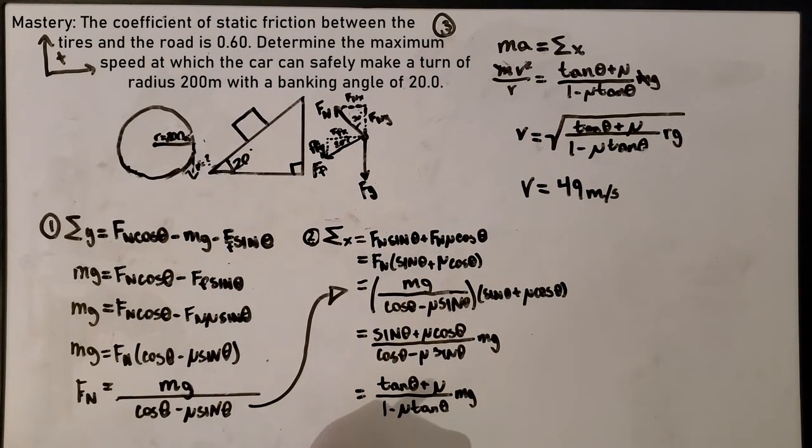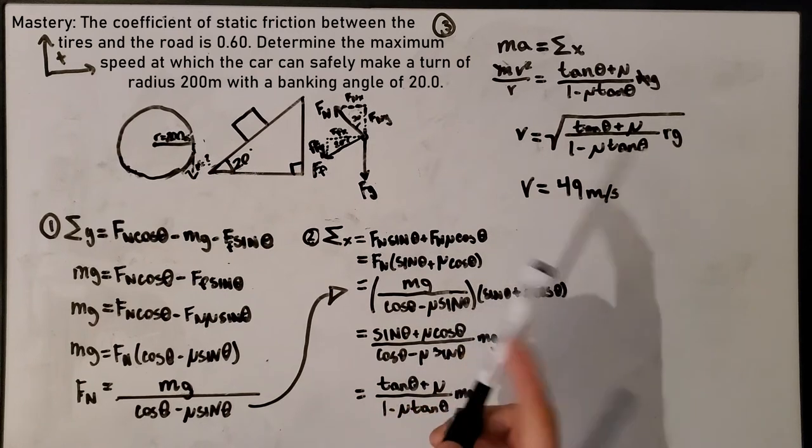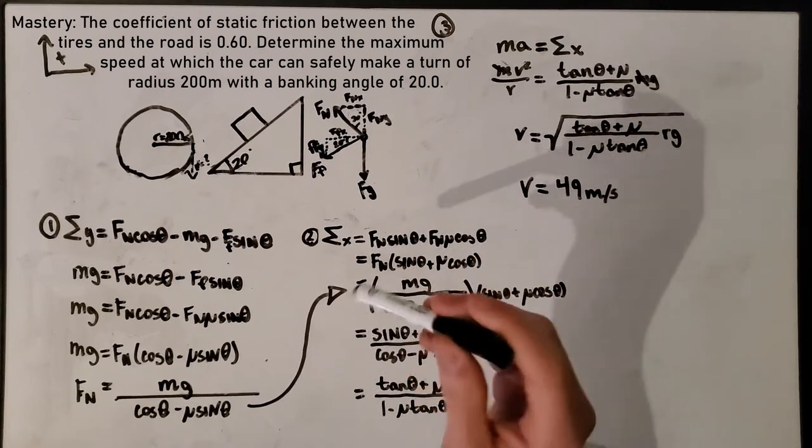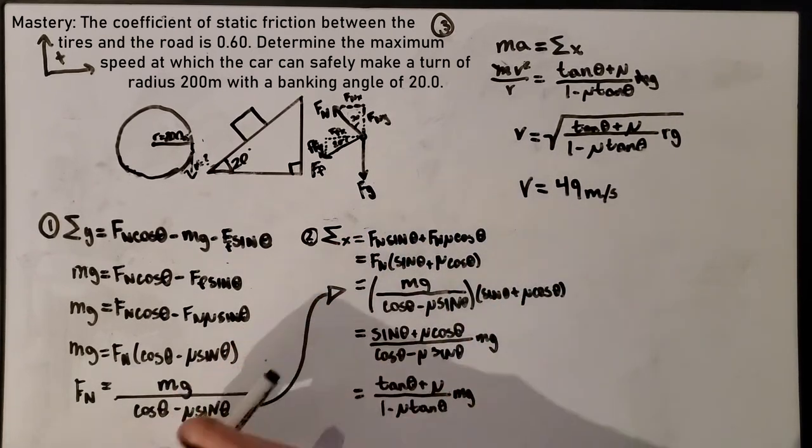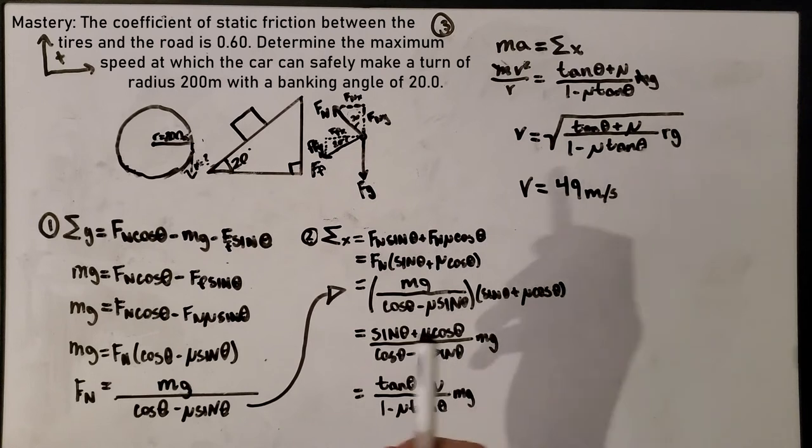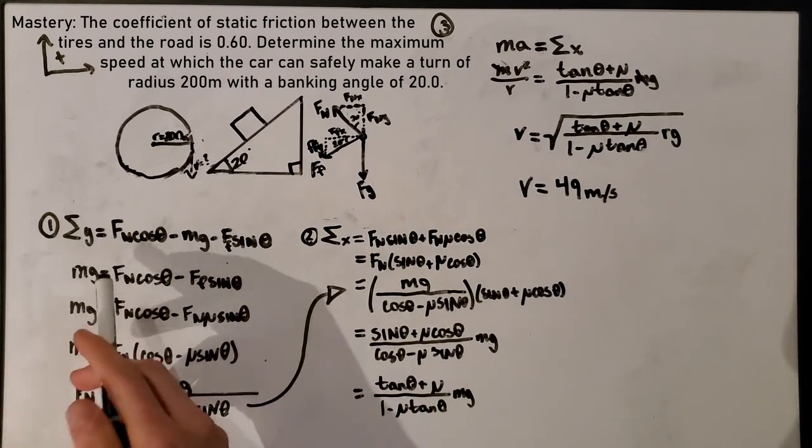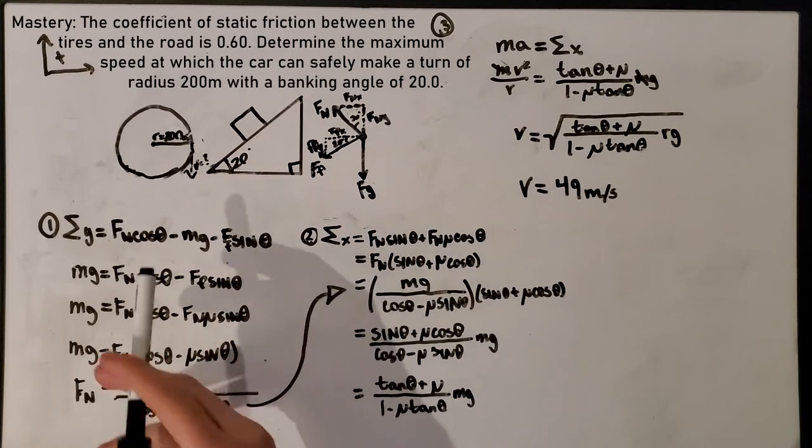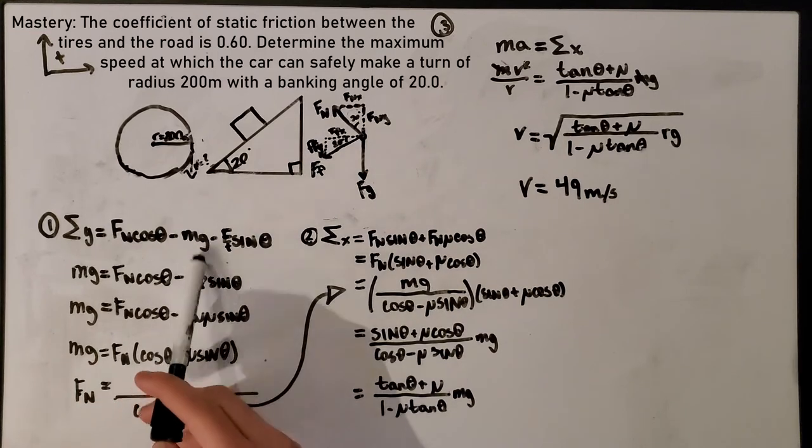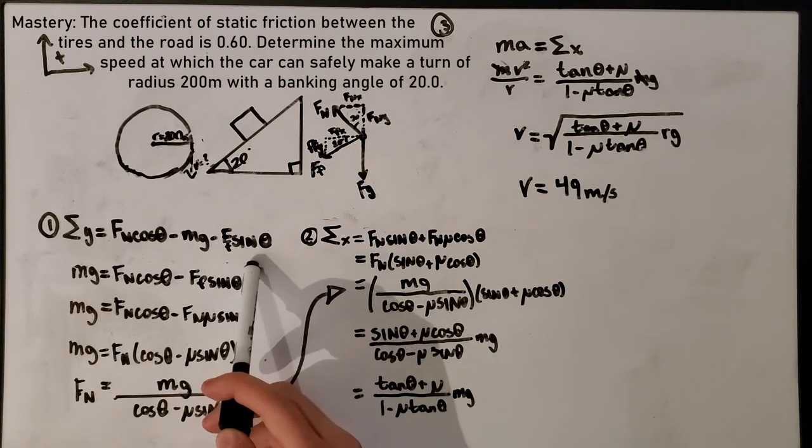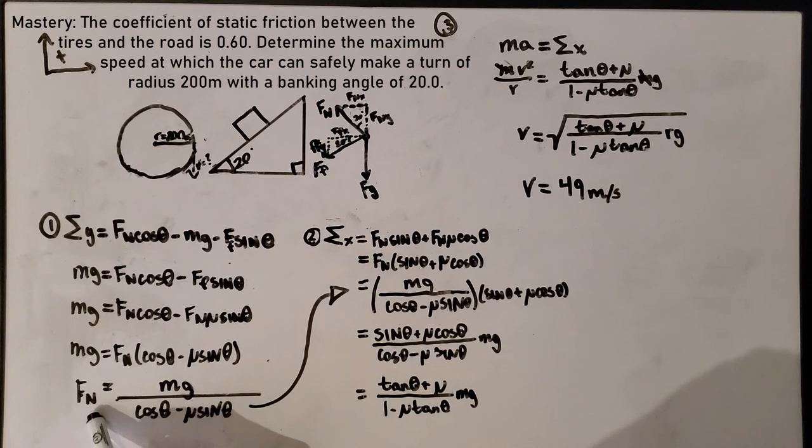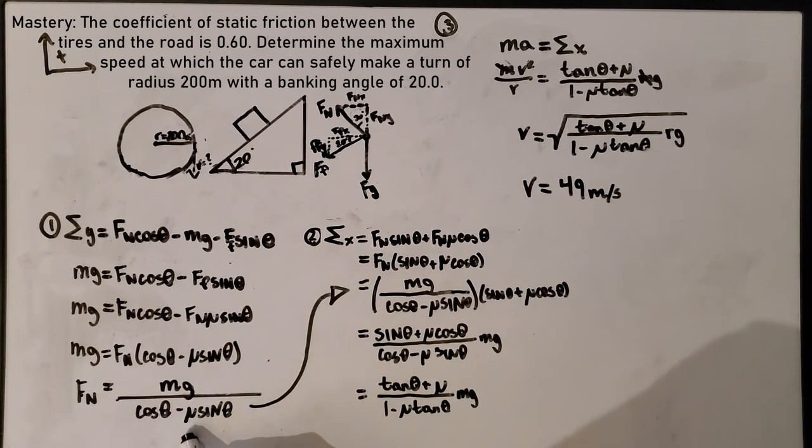Now we have a new component: friction. Friction always opposes the direction of motion. The question said the maximum speed, which means the speed at which it won't fly off. If it's flying off this direction, then the friction has to go that direction. Step number one is finding all the f net in the y direction. We have the normal force in the y direction, the force of gravity, minus the force of friction in the y direction. Then we take all of those numbers, solve and isolate for normal force. That will be used later.